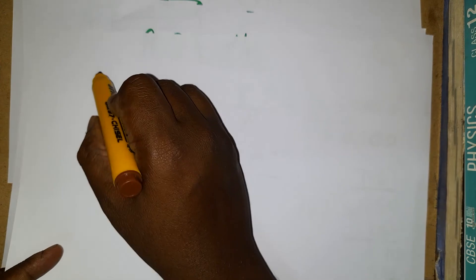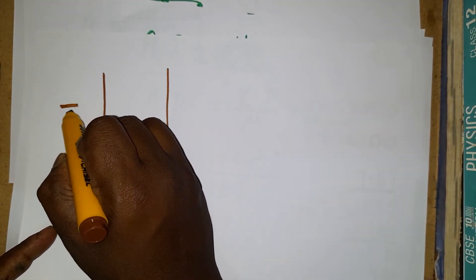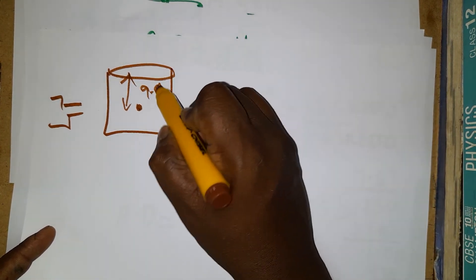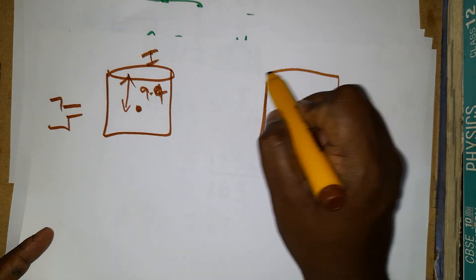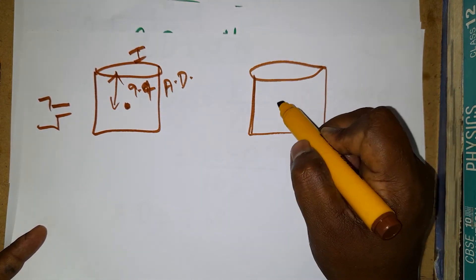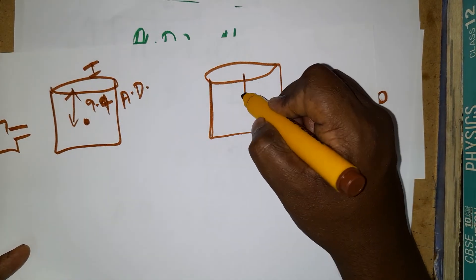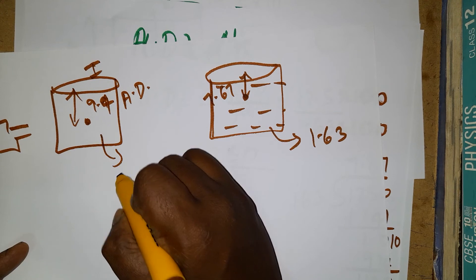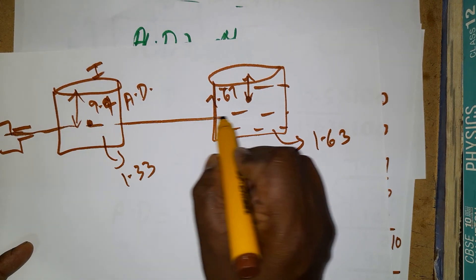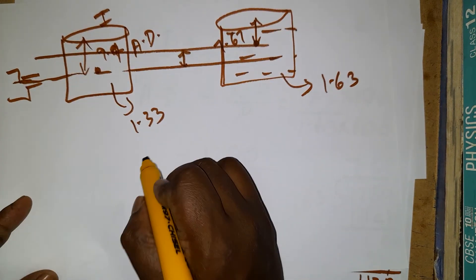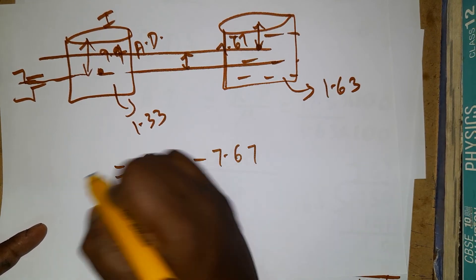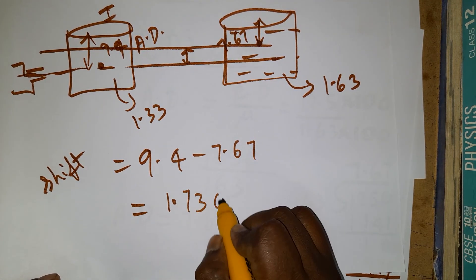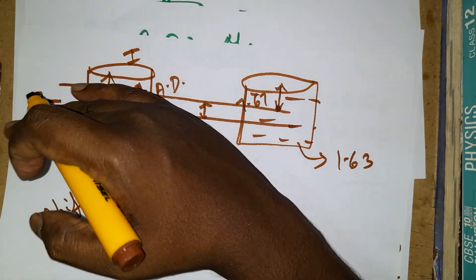Now combining both cases: in Case 1 (water, refractive index 1.33), the apparent depth is 9.4 centimeters. In Case 2 (liquid, refractive index 1.63), the apparent depth is 7.67 centimeters. The apparent depth decreases with the higher refractive index liquid. The shift of the microscope required is 9.4 minus 7.67, which equals 1.73 centimeters upward.